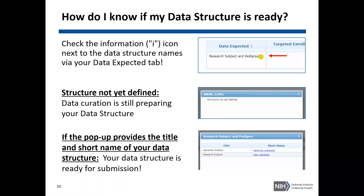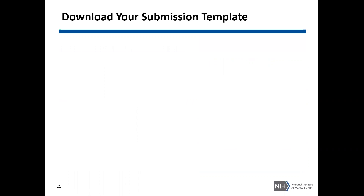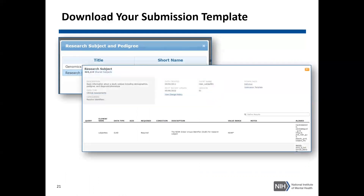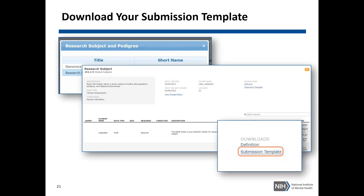If your structure is ready for submission, your next step is to download the submission template for that data structure. Your submission template is what you use to enter your data and to submit your data into NDA. To download your submission template, click on the short name hyperlink after clicking the information eye icon. This will take you to your data structure page, where you'll see a download section towards the right. Click on submission template.